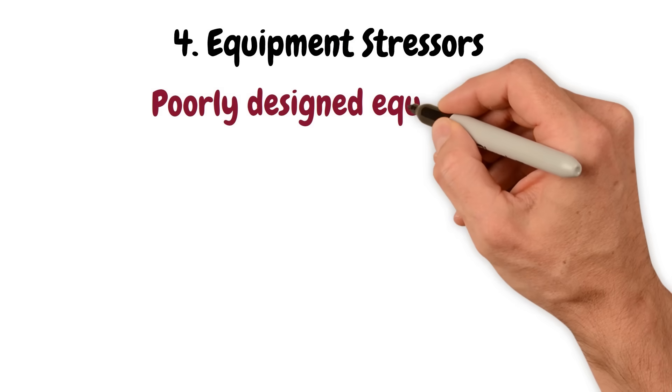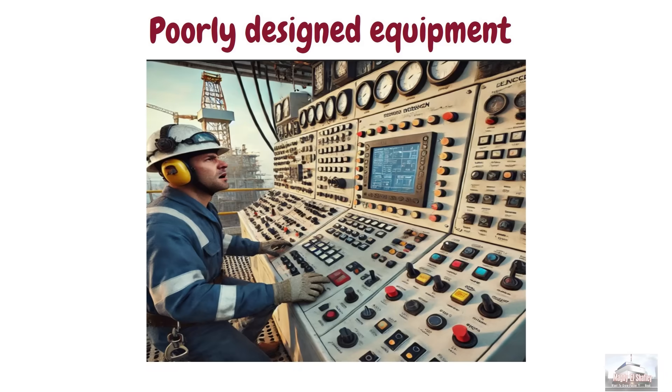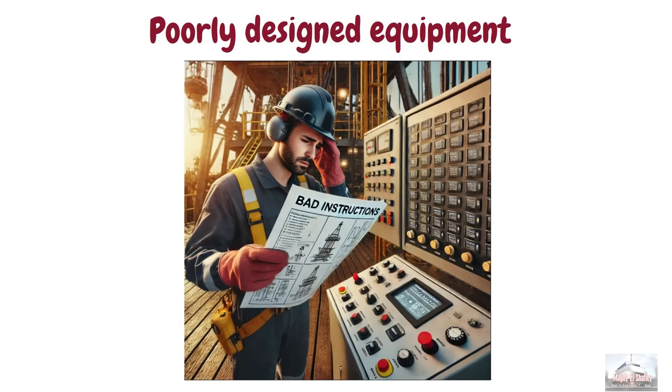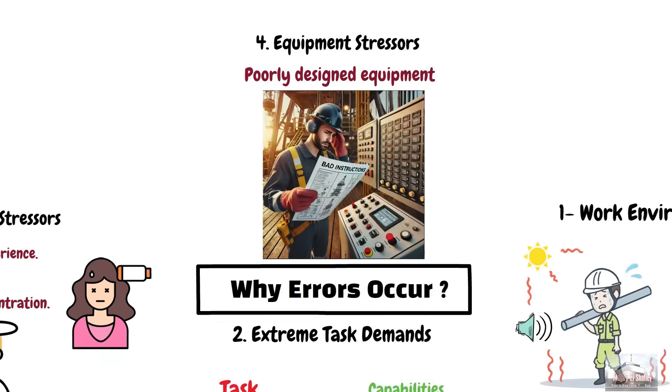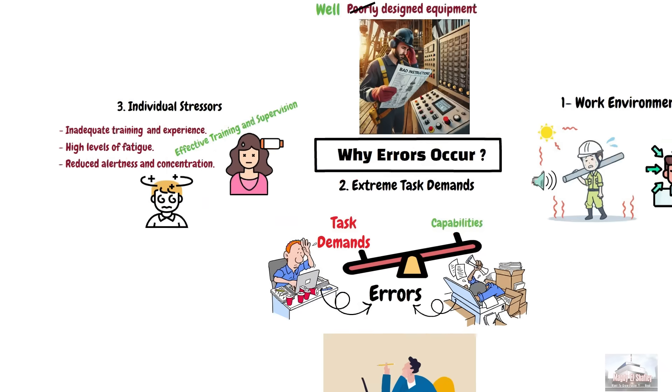And finally, the equipment stressors. Poorly designed equipment can also contribute to errors. Examples include poorly designed displays and controls, confusing or inaccurate equipment instructions. The good news is that we can reduce these errors by minimizing these stressors. This can be done by providing better equipment design, effective training and supervision, and simplifying tasks.